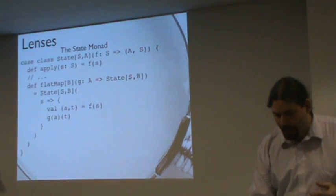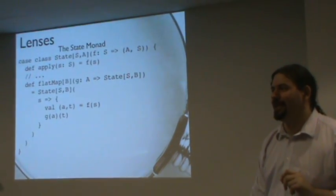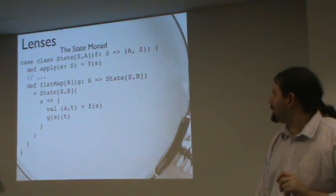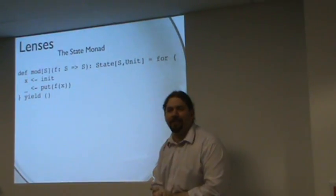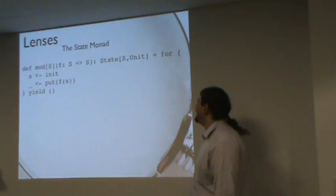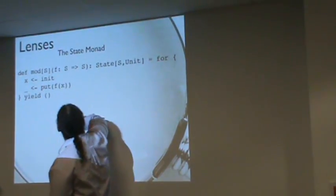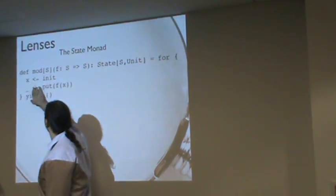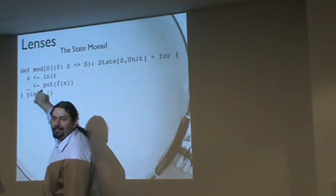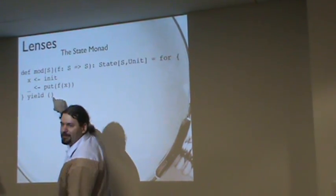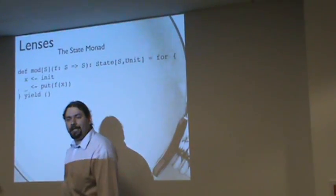So what can we do with these things? By using flat map, we got access to Scala's for yield sugar. We needed flat map and map to really make that sing. Now I can build blocks that look kind of imperative if you squint a little bit. We're going to build a for block and read the result of our state. X here is actually, I probably should have called it S. I want to compute some function applied to S and put it back into my state. Here I'm going to yield unit because I don't actually care about the result.